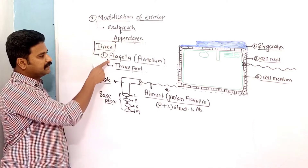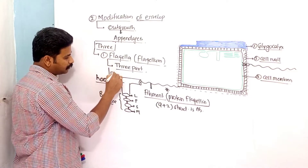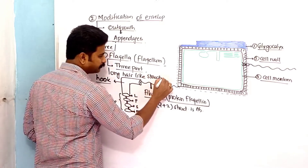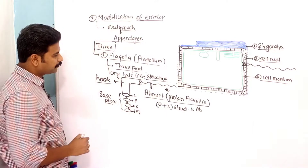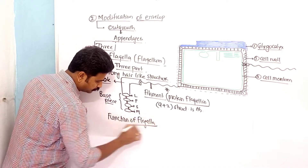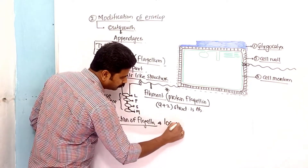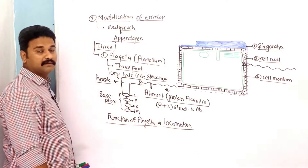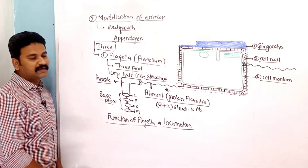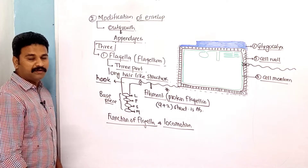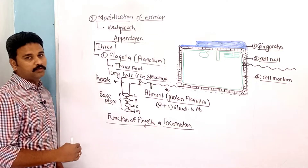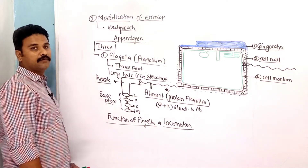So flagella is the first appendage — a long hair-like structure. The function of flagella is to perform locomotion. If a bacterium has flagella, it helps the bacterium in locomotion. Such bacteria are generally motile. Depending on motility, there are two types of bacteria: motile ones that can move, and non-motile ones that cannot.